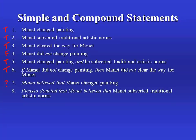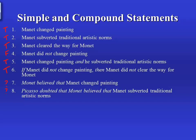Similarly, in eight, we take 'Manet subverted traditional artistic norms', sentence two, attach 'Monet believed that' to it, and then attach 'Picasso doubted that' to that, and we get: Picasso doubted that Monet believed that Manet subverted traditional artistic norms. This portion of the sentence, which is number two, we're taking to be true, but that doesn't tell us the truth value of this portion of the sentence, nor of the sentence as a whole, because we need to do some historical or biographical research and try to figure out what Picasso thought about what Monet thought about Manet. Again, with eight, we can't determine the truth value of the whole simply from the truth values of the components.